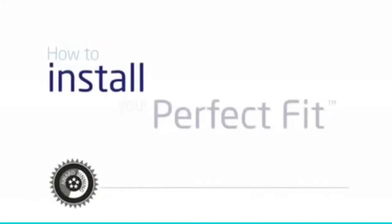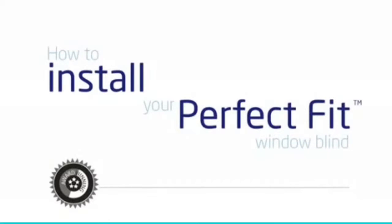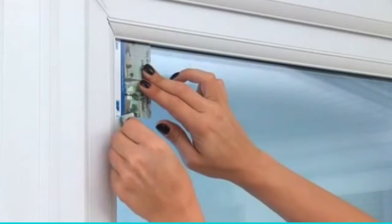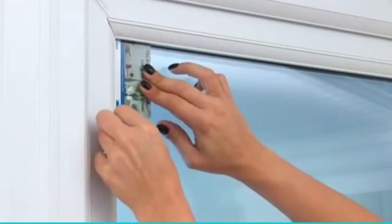How to install your perfect fit blind. You will need to fit four brackets into the window frame onto which your blind will simply click into place.